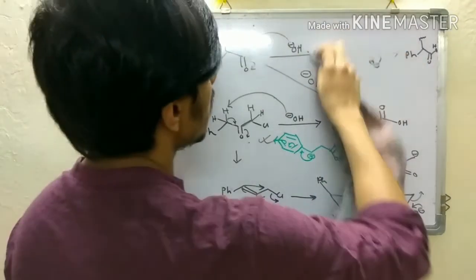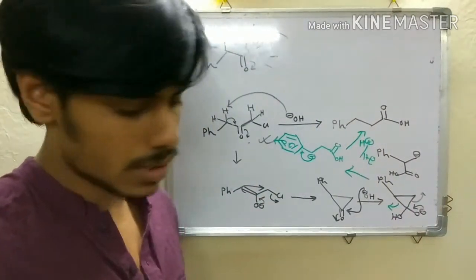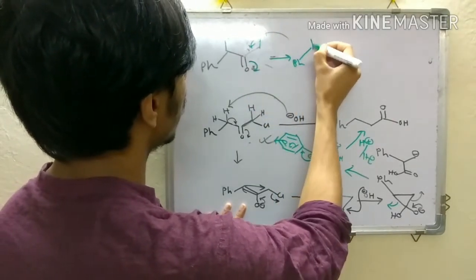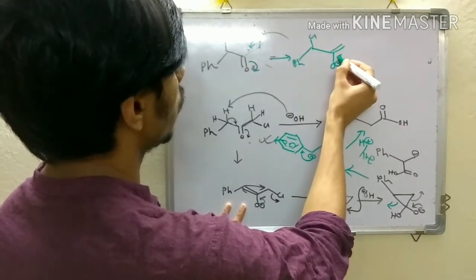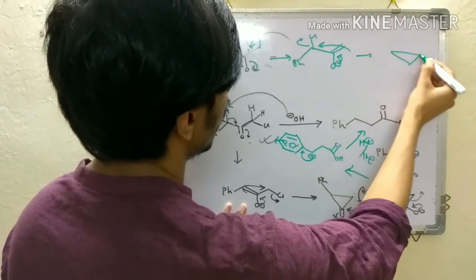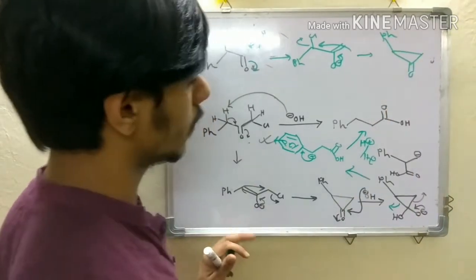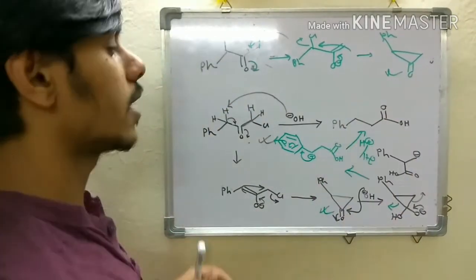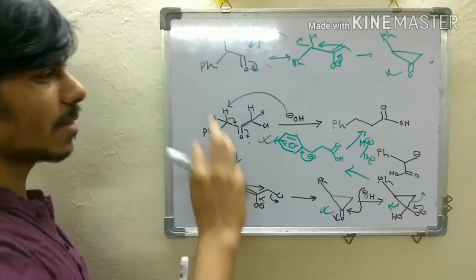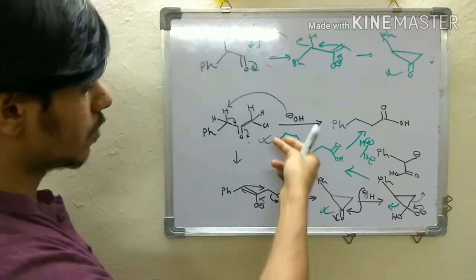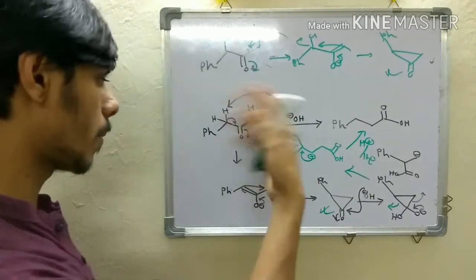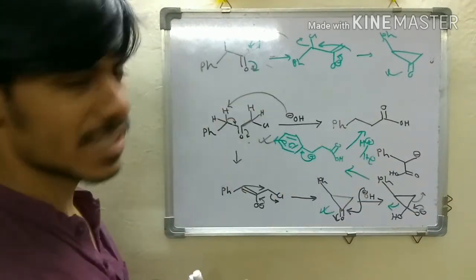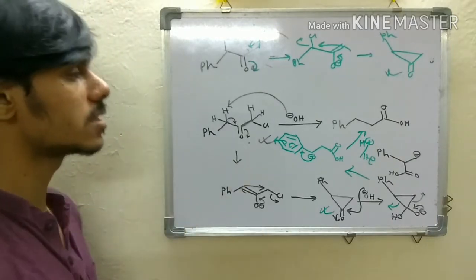Now how can we explain the same product from the second compound? In that case also, you deprotonate from the alpha position to give the same enolate, and from that you get the same cyclopropanone intermediate. Since the intermediates are identical, after that the story is the same and you get the same product. This is the mechanism of the Favorskii reaction.